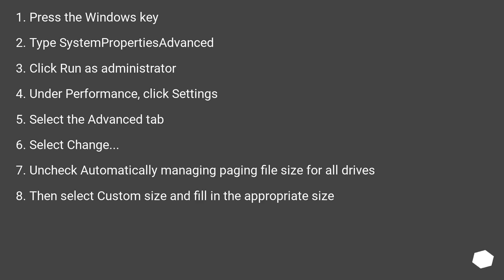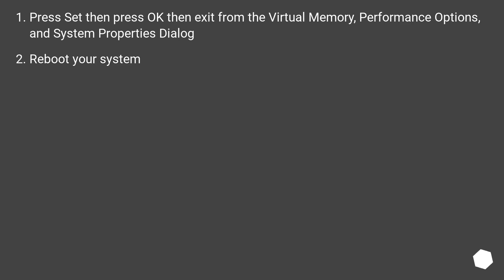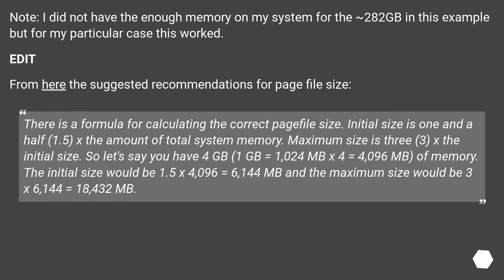Windows 10: Press the Windows key. Type 'system properties advanced'. Click 'Run as administrator'. Under Performance, click Settings. Select the Advanced tab. Select Change. Uncheck 'Automatically managing paging file size for all drives'. Then select Custom Size and fill in the appropriate size. Press Set, then press OK, then exit from the Virtual Memory, Performance Options, and System Properties dialog. Reboot your system. Note: I did not have enough memory on my system for the 282 GB in this example, but for my particular case this worked.